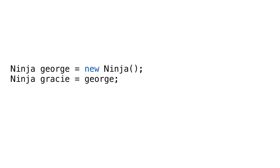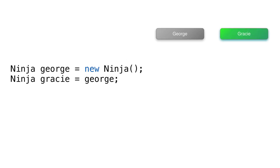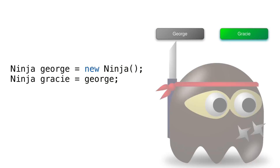The first thought might be to create a new instance like this: we have enemy1, and we create enemy2 and assign it to the first enemy. That really didn't work — we just have two enemy variables pointing to the same enemy. This didn't copy anything, and we still have one instance.